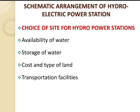Third, cost and type of land — the land for the construction of the plant should be available at a reasonable price, and the bearing capacity of the ground should be adequate to withstand the weight of heavy equipment to be installed. Fourth, transportation facilities — the site selected for the hydroelectric plant should be accessible by rail and road so that necessary equipment and machinery could be easily transported. This is the choice of site for the hydropower station.